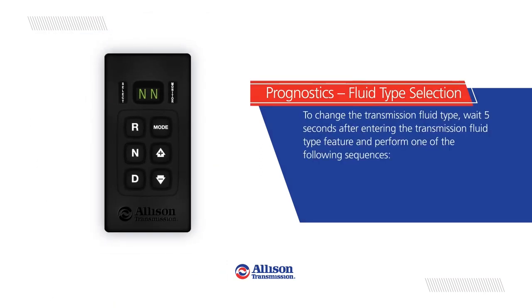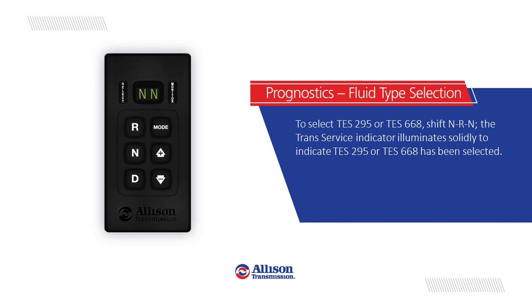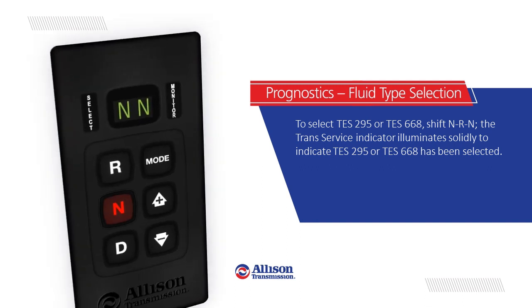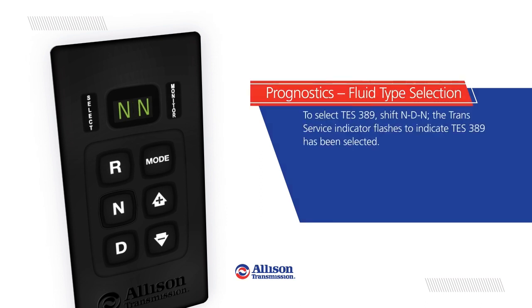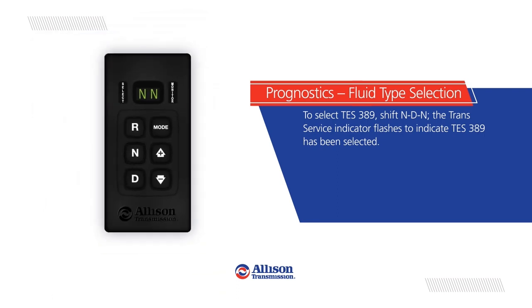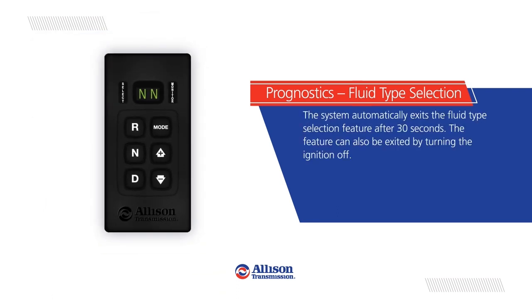To change the transmission fluid type, wait five seconds after entering the Fluid Type feature, then perform one of the following sequences. To select TES 295 or TES 668, shift neutral, reverse, neutral — the TransService Indicator illuminates solidly to confirm selection. To select TES 389, shift neutral, drive, neutral — the TransService Indicator flashes to confirm selection. The system automatically exits the fluid type selection feature after 30 seconds.